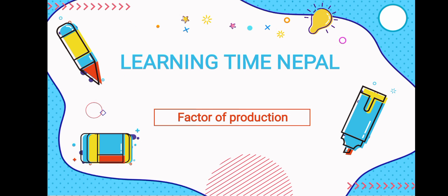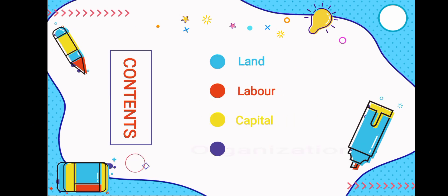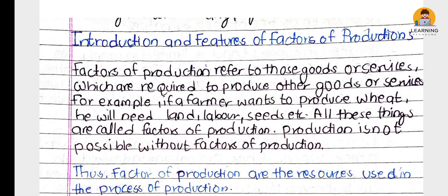What is the economics factor of production? The main factors are land, labor, capital, and organization. Factor of production refers to those goods or services which are required to produce all the goods or services.